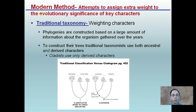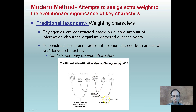Modern methods attempt to assign extra weight to the evolutionary significance of key characteristics — we call this weighting characteristics. So instead of just organizing, we give weight to certain developments that may be more complex. All phylogenies are constructed based on large amounts of information gathered over the years. Traditional taxonomists used both ancestral and derived characteristics, while cladists only use derived characteristics. The cladogram uses more specifics to divide and categorize organisms.